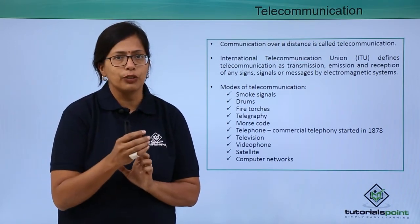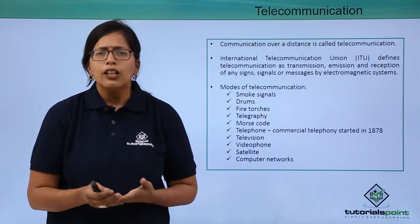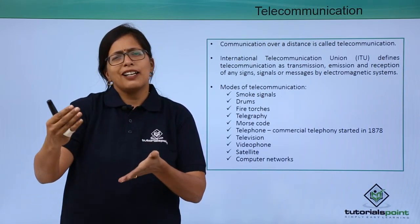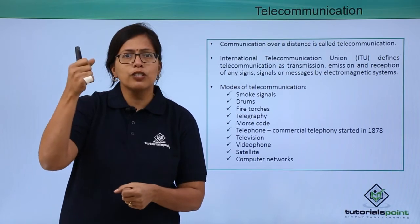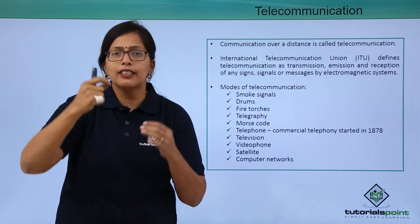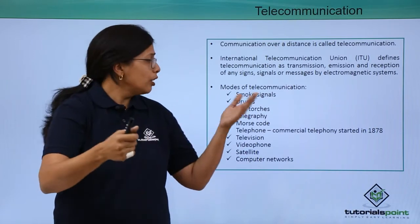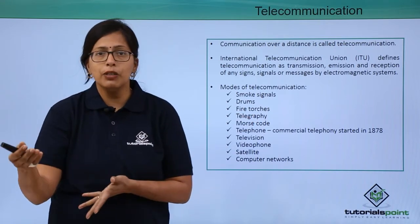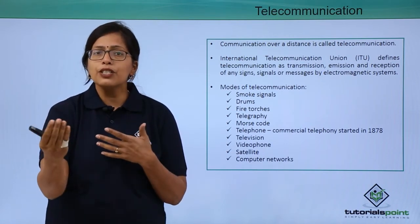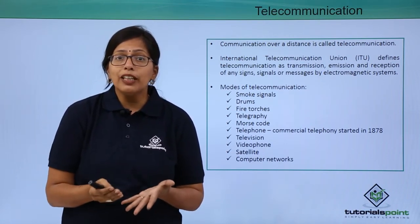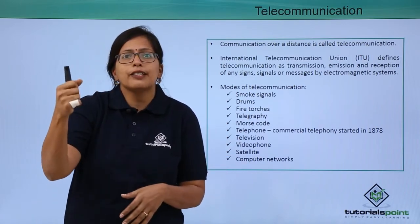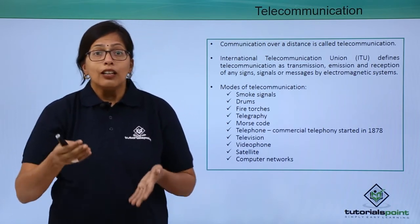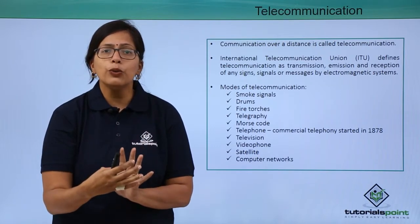So how did telecommunication start? The first mode of telecommunication was smoke signals. If I am standing here and another person is standing 5 miles away, I will use a smoke signal that the other person can see and understand. Similarly, drums or fire torches were used. However, these means of communication could only convey predetermined ideas — for example, raising a torch means yes, and making a big circle means no — which limited the exchange of information.